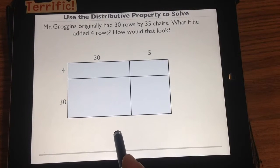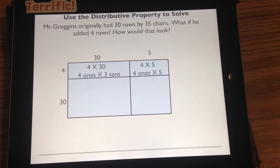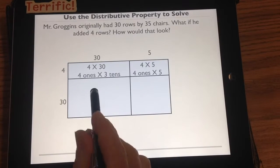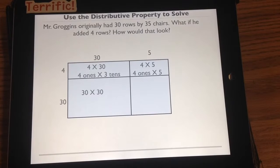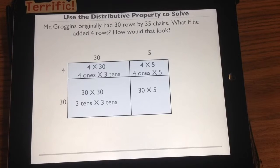We're going to use our length times width to measure 4 times 30, and that is 4 ones times 3 tens. We're going to do the same thing for our smaller rectangle, which is 4 times 5, or 4 ones times 5. Let's do our area model for the next, which is 30 times 30. In unit form, it's 3 tens times 3 tens. And then our last rectangle, 30 times 5, or 3 tens times 5.